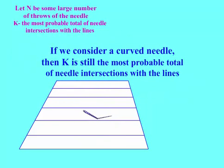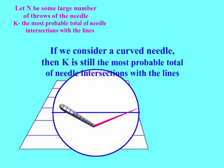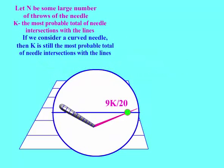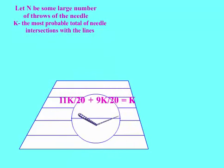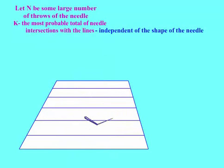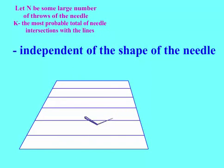If we consider a curved needle, then K is still the most probable total of needle intersections with the lines, independent of the shape of the needle.